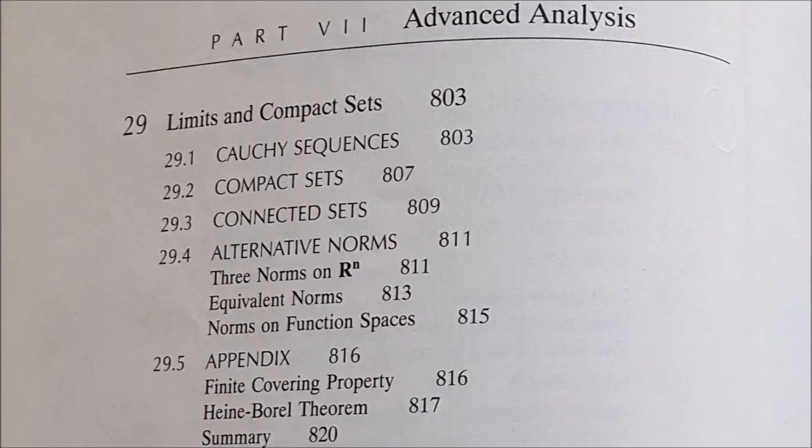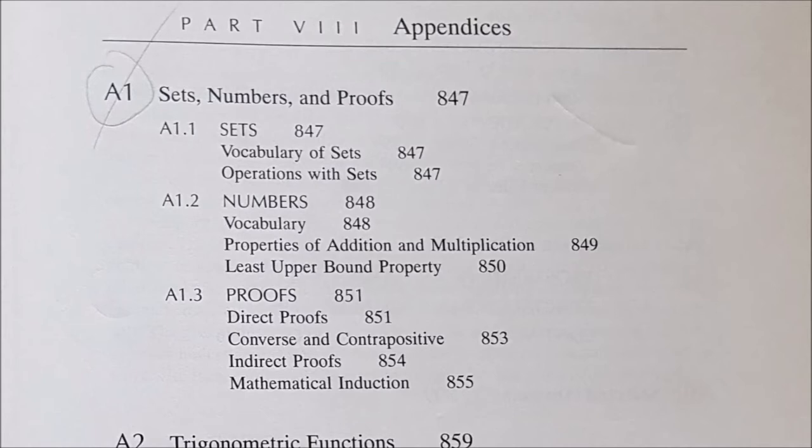Part seven is the last main section of the book and covers advanced analytics — limits and compact sets, as well as calculus of several variables part two, taking the calculus even further. Then there's section eight, the appendix. The book does a really good job covering all the material without boring you with too many derivation details — you can go to the appendix for proofs and derivations. That said, a lot of the notation is mathematical notation, so if you don't have a strong math background, this book might be a little difficult to start with.